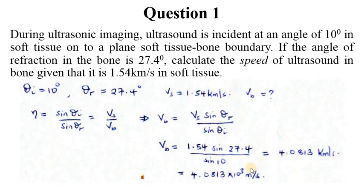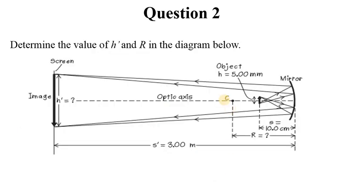We can express this in meters per second by multiplying by 10 raised to power 3, so 4.0813 times 10 to the 3 meters per second. That is how we solve for that with respect to the concept of refraction.